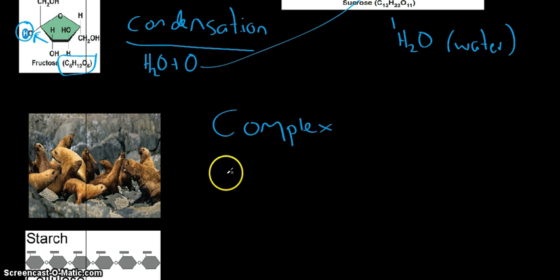Complex carbs are also called polysaccharides. I've got a little image here to help us understand what this word means. Polysaccharides - saccharides, remember, is the scientific word for sugar, because carbohydrates are sugar groups.